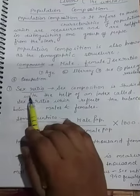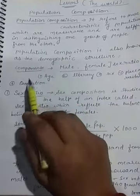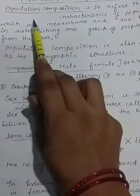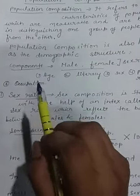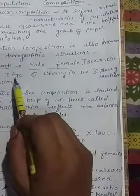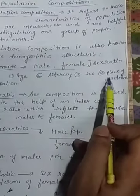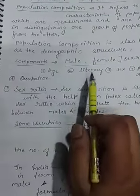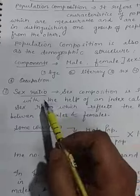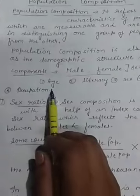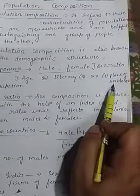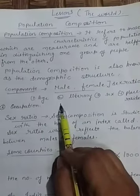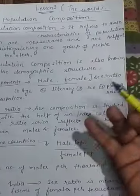Now, what are the components which this topic deals with? The important components are age, literacy, sex ratio, and place of residence — which we had studied in the migration chapter. These are the major components, and we can also add occupation. On the basis of these components, we can understand the population of an area.